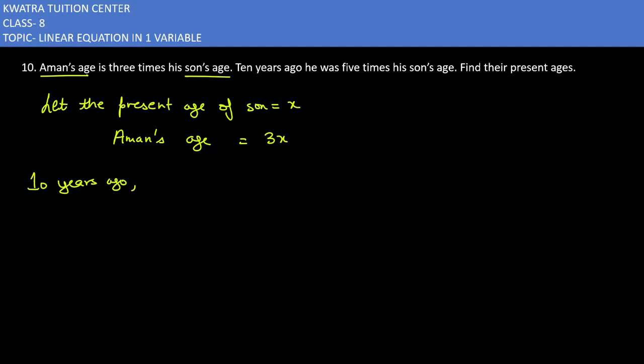So, 10 years ago, present age of sun would be x. If we say from now, we will add it. And if we talk about ago, we will subtract. So first is x minus 10. Now, how will the age of Aman be? The age of Aman would be 3x minus 10.